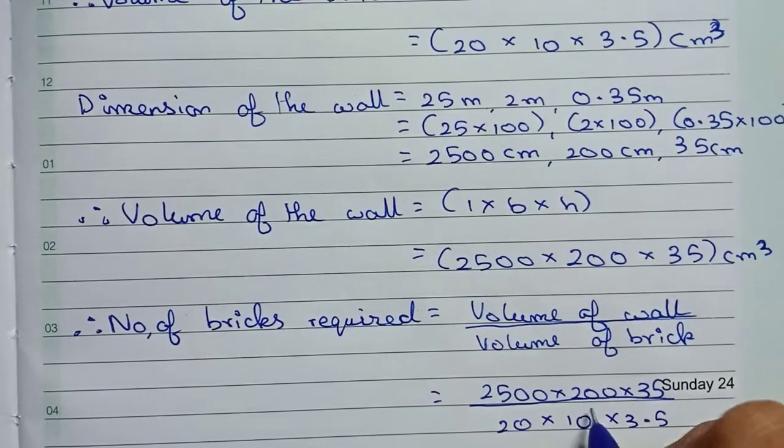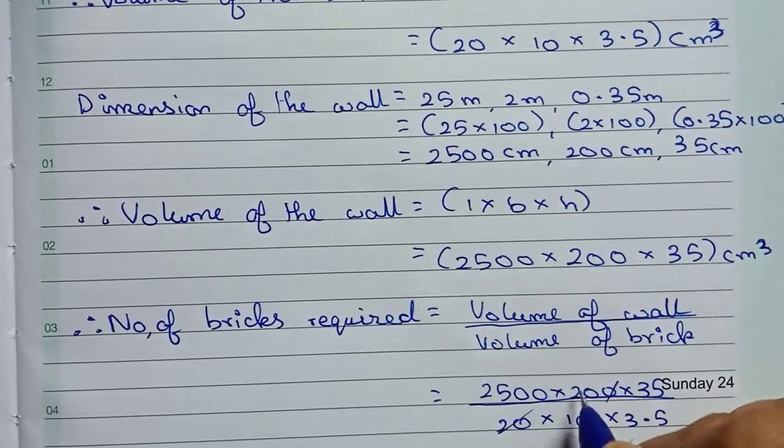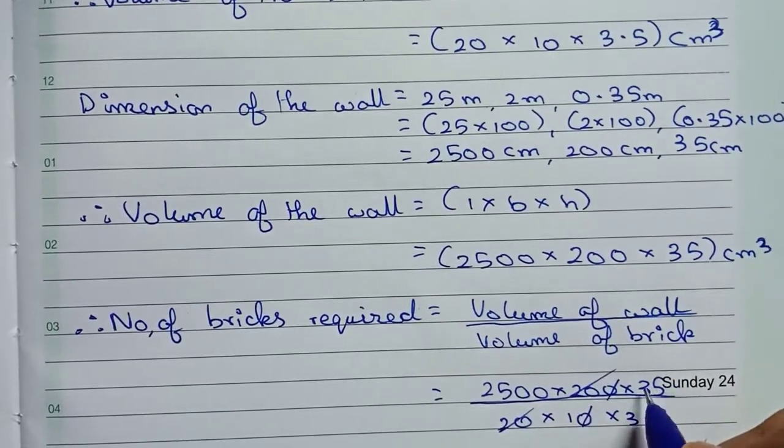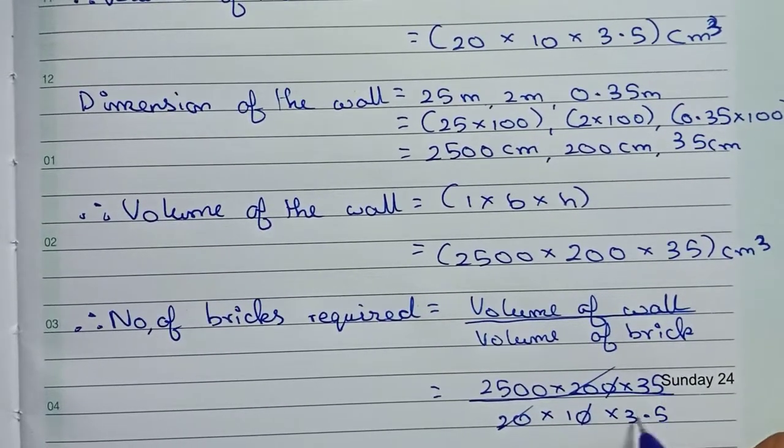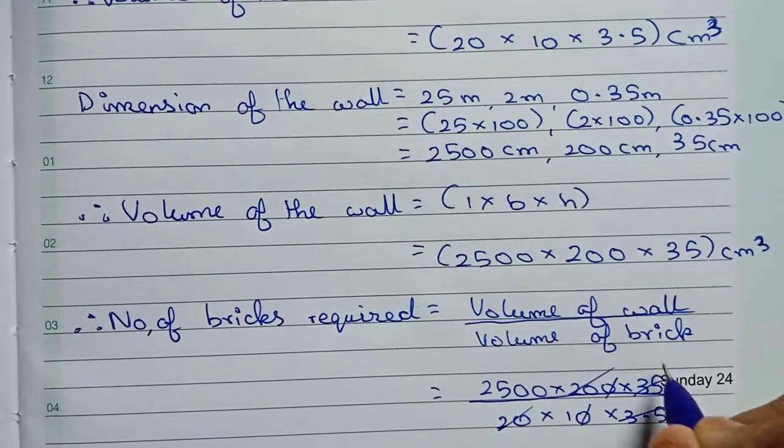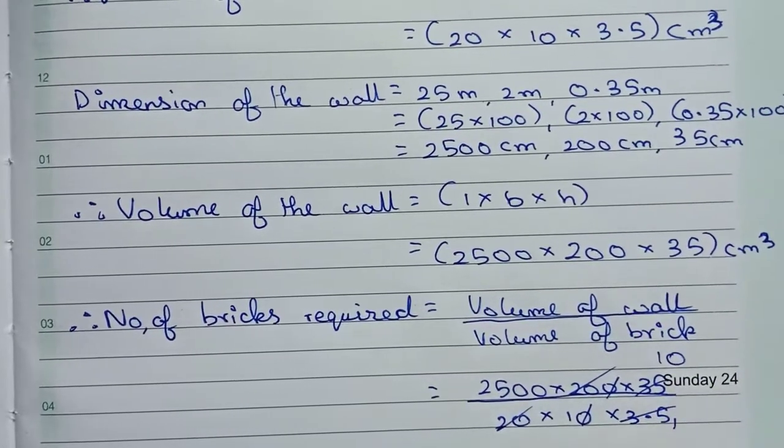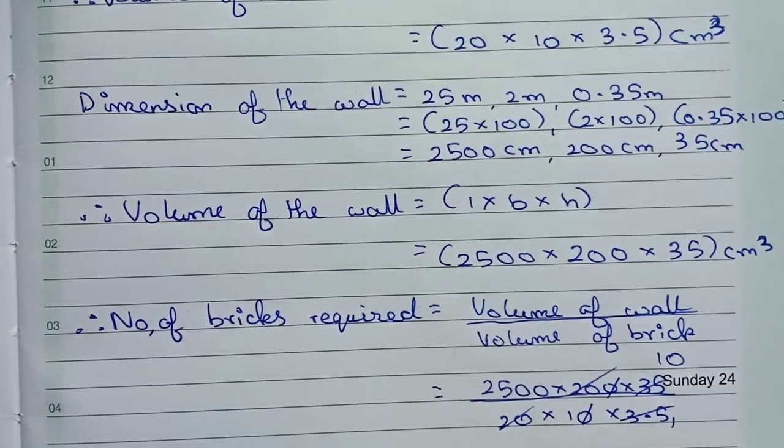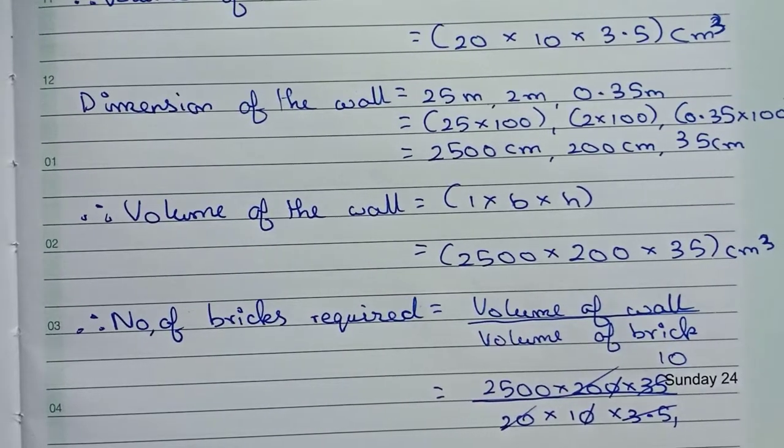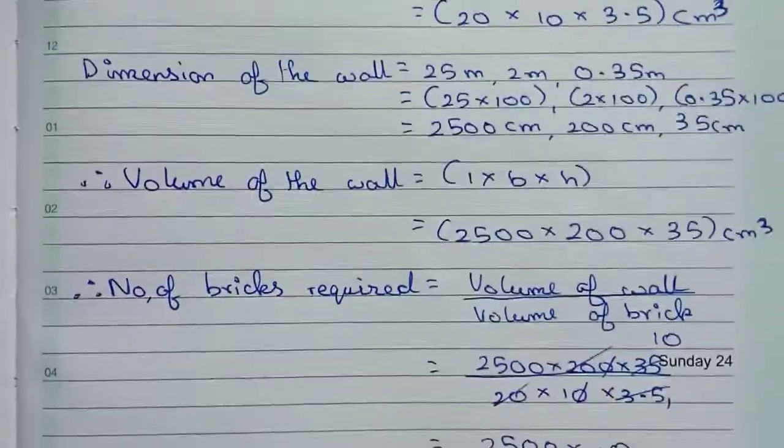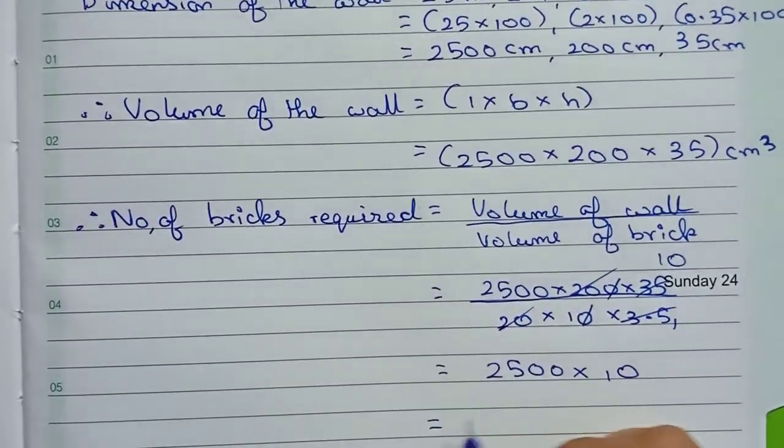First you cut the zeros. Now I cut 20 and 200. Now we can cut 3.5 and 35, so it will become 10 divided by 1. Remaining is 2500 × 10, which will equal 25,000.